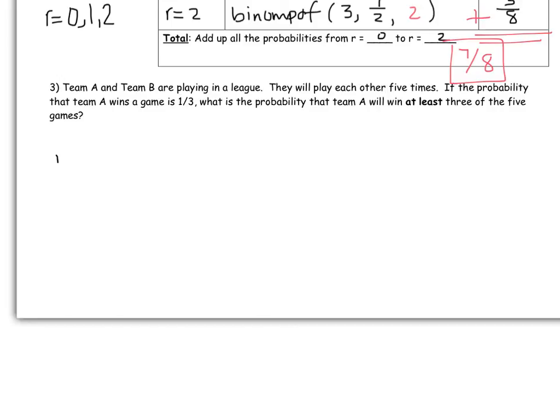So what is my n? How many games do they play in total? Well, they say they play each other 5 times. What is my p? What is the probability that Team A wins? Well, it tells you 1 third. And what is my r now? It's saying that the probability that Team A wins at least 3 of the 5 means that they could win 3 games, 4 games, or 5 games. So my r is 3, 4, or 5. So we're going to add up the probabilities for r being 3, r being 4, and r being 5.